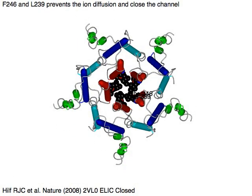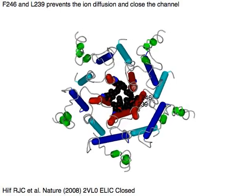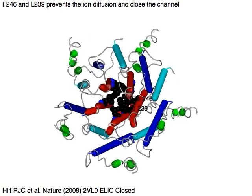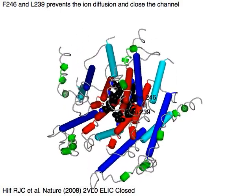Phenylalanine 246 and leucine 239 prevent ion diffusion and close the channel.